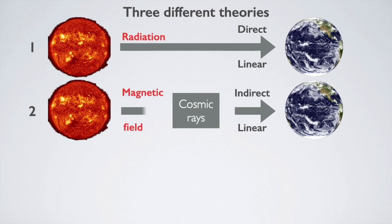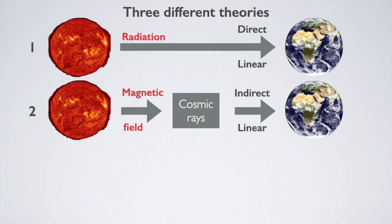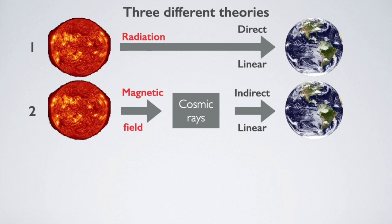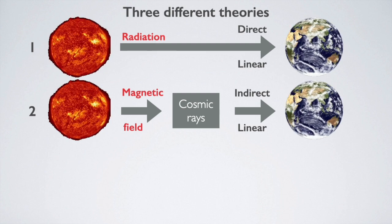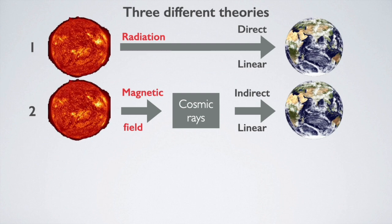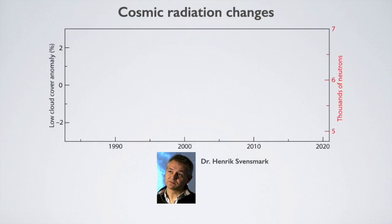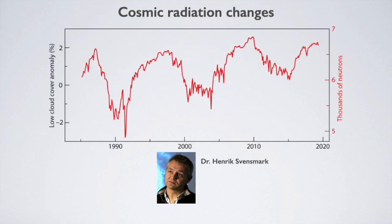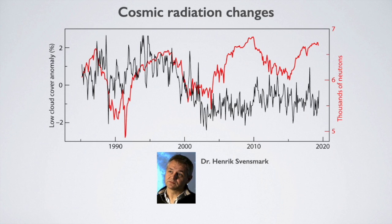In the second theory, it is cosmic rays that change the climate, and the sun's magnetic field regulates the amount of cosmic rays that reach the Earth. It is therefore an indirect effect, but also a linear one, since the change in cosmic rays would be proportional to the activity of the sun. This theory, proposed by Dr. Svensmark, is based on the fact that cosmic rays create ions in the atmosphere that act as cloud seeds. Part of the theory has been confirmed by experiments in a particle accelerator, but it is not yet known whether the effect is significant enough. One problem is that cosmic rays have increased while satellites show a decrease in the low cloud layer, which may actually contribute to the observed warming.